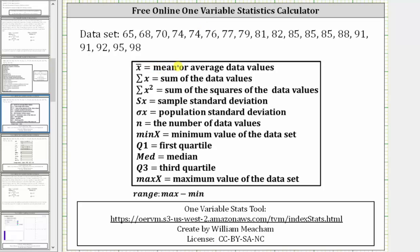X bar is equal to the mean or average of the data values. Sum of X is equal to the sum of all the data values. Sum of X squared is equal to the sum of the squares of the data values. SX is equal to the sample standard deviation. Sigma X is equal to the population standard deviation. N is equal to the number of data values.